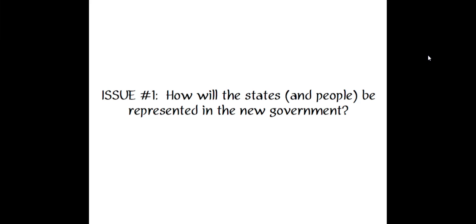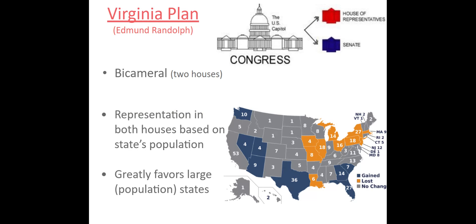Issue number one: how will the states and people be represented in this new government? How do we count the population to correctly represent ourselves in government? There were two major plans. The first, the Virginia Plan, was written by Edmund Randolph. His idea was to create a bicameral, or two-house, Congress — a lower House of Representatives and an upper Senate — where representation in both houses would be based on state population. The problem was that large states with larger populations would be much more highly represented in Congress, meaning small states had a lot to lose.